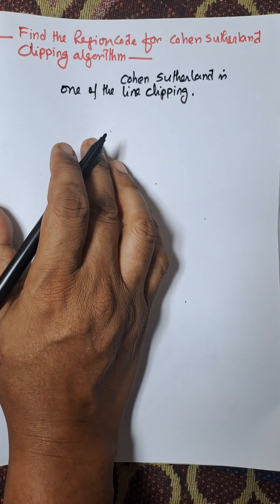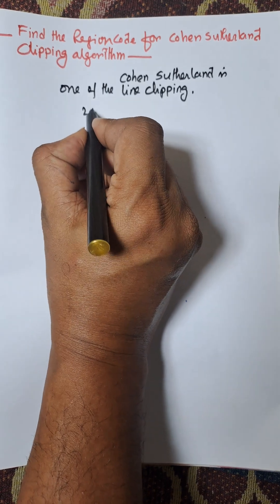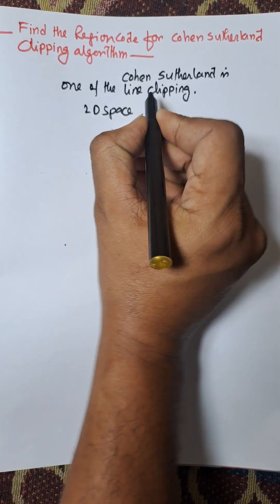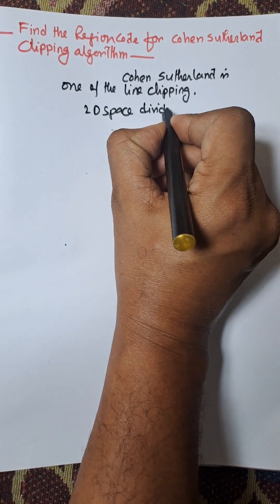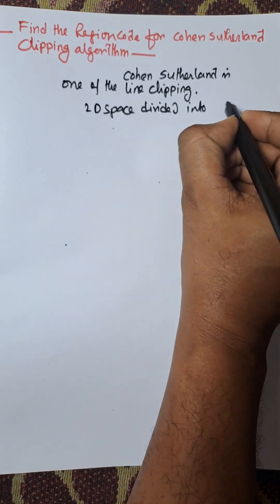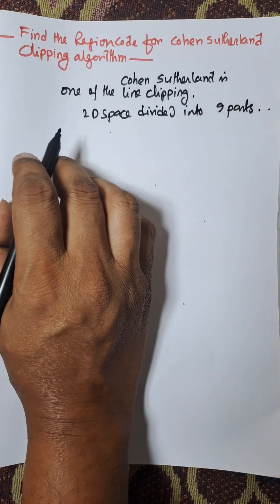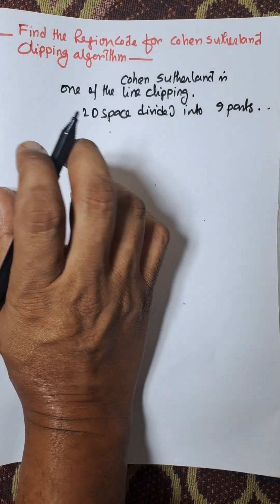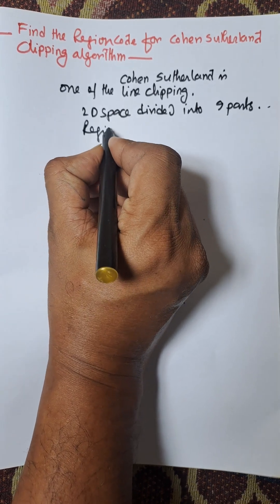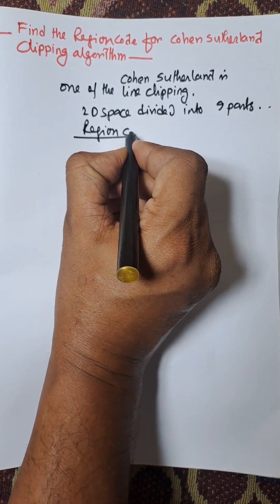According to Cohen-Sutherland algorithm, the 2D space is divided into 9 parts. Each part consists of a code that is known as a region code. Each space consists of a region code.